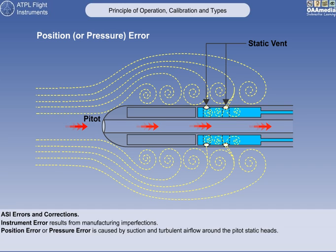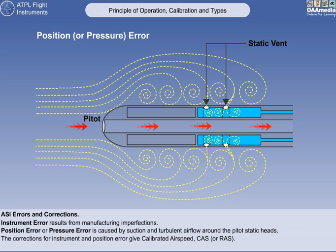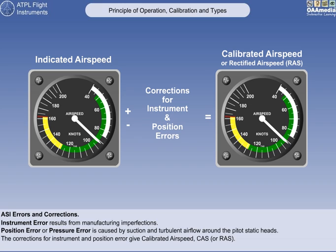The second error in order of correction is position error, which is sometimes known as pressure error. Position error occurs as a result of suction and turbulent air flow in the vicinity of the pitot static heads, which feed the air pressure instruments. The corrections applied to the indicated airspeed for instrument and position error give us calibrated airspeed. A correction card on the aircraft will combine the corrections for both instrument error and position error into a single correction table to give us calibrated airspeed, or CAS. Note that calibrated airspeed is sometimes referred to as rectified airspeed, or RAS. To summarise: the indicated airspeed plus or minus the instrument and position error corrections gives us the calibrated airspeed, or CAS.